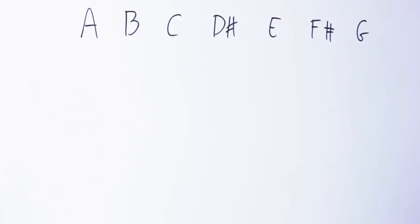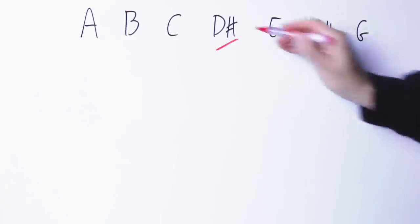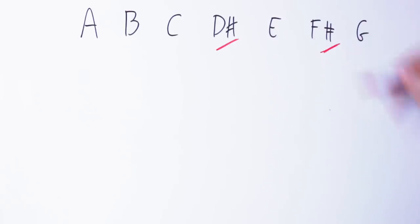If we compare this scale to the A natural minor scale, A, B, C, D, E, F, G, we see that here we have a raised four and a raised sixth.